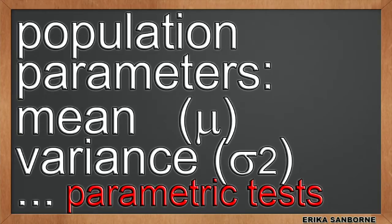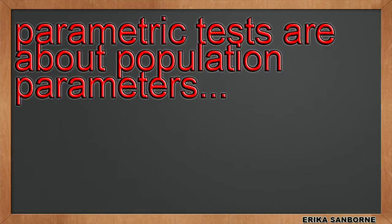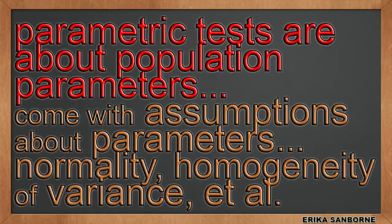Those tests have assumptions, such as that the entire population of scores is normal in shape, or maybe homogeneity of variance has to be assumed. These assumptions are about parameters, too. These are parametric tests.